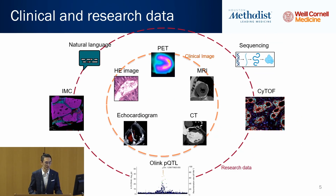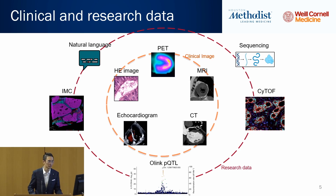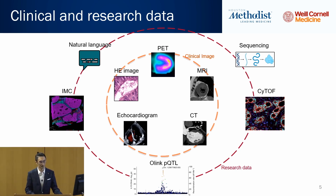As a data scientist, if we look into the data, we have so many different types. Here are several examples. In the middle, we have clinical images: CT, MRI, echo images, different kinds. As basic research, we also have sequencing data, protein data, cytokine data, protein image data, and genetic variation, as well as natural language describing how experts characterize a patient. All this kind of data should be treated differently.